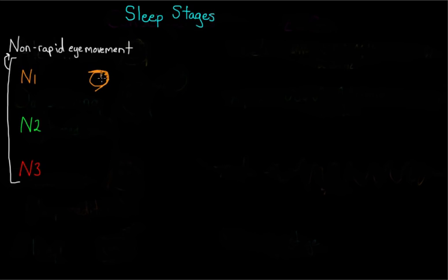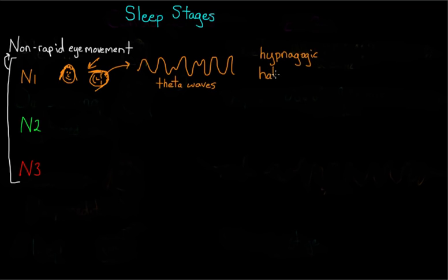N1 is the stage between sleep and wakefulness. This is when your brain starts producing theta waves. You might experience strange sensations known as hypnagogic hallucinations, which is kind of a fun name, but these can include hearing or seeing things that aren't there, such as seeing a flash of light or a lot of people hear someone calling their name or a phone ring or doorbell or something like that.